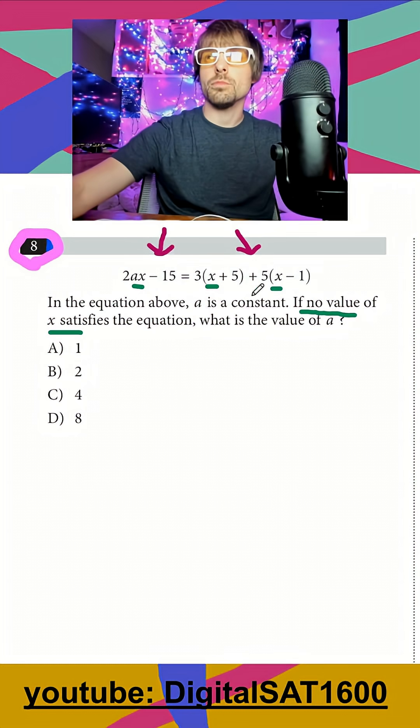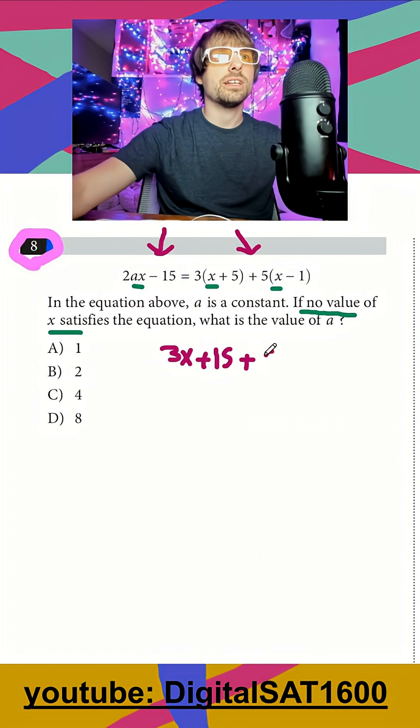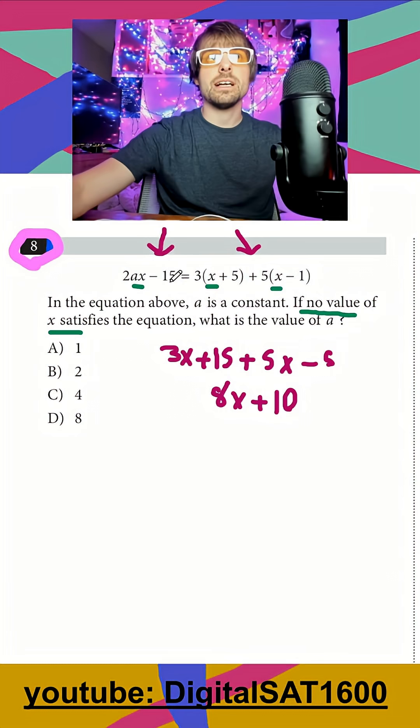For equation two, we're going to have to do some distributing and combine like terms. I would get 3x plus 15 plus 5x minus 5. So that's going to get 8x plus 10. So that would be equation two. Equation one was already done.